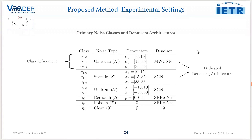Here are the classes used in NoiseBreaker. A class is defined by a noise type and a range of parameters that corrupt the image of that class. In NoiseBreaker, class refinement is used, meaning each noise type has different classes. Additionally, we use dedicated denoising architectures, meaning each noise type can be removed through a different denoising architecture.